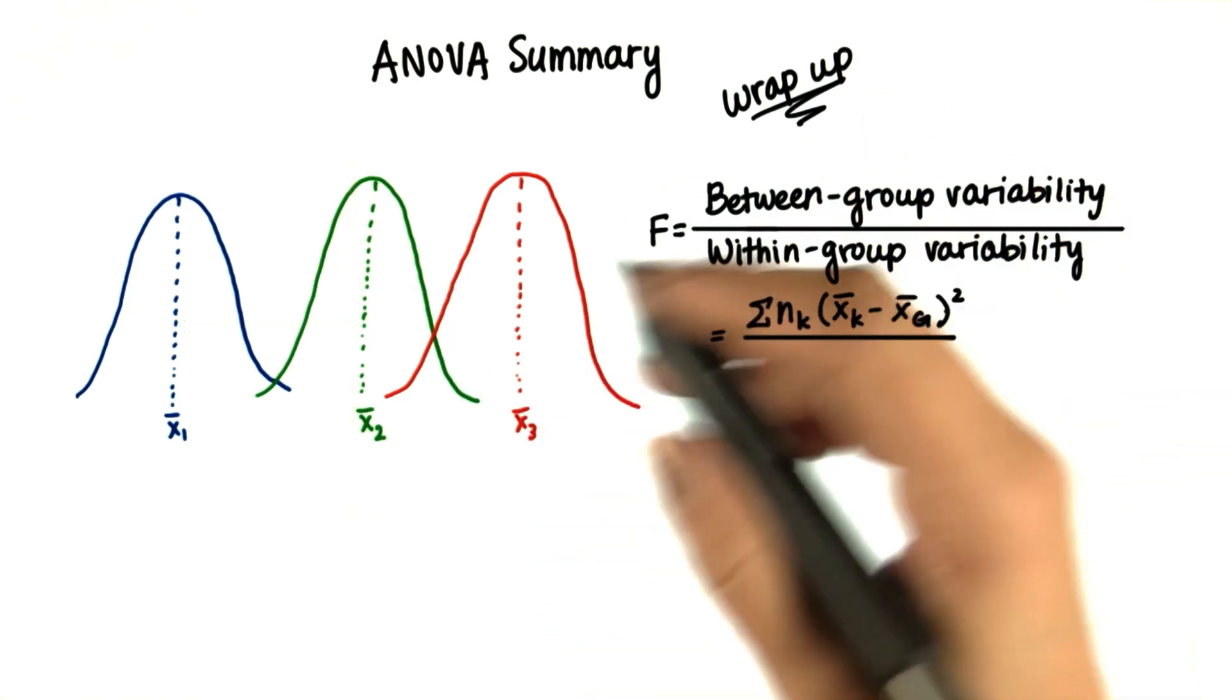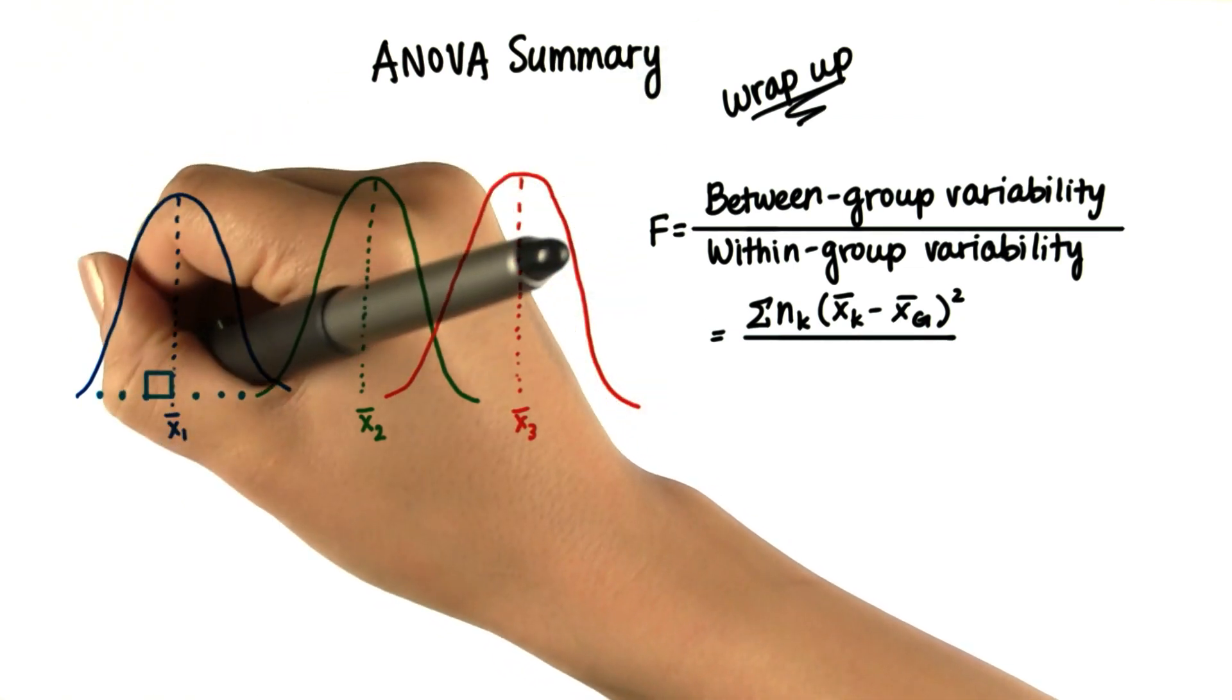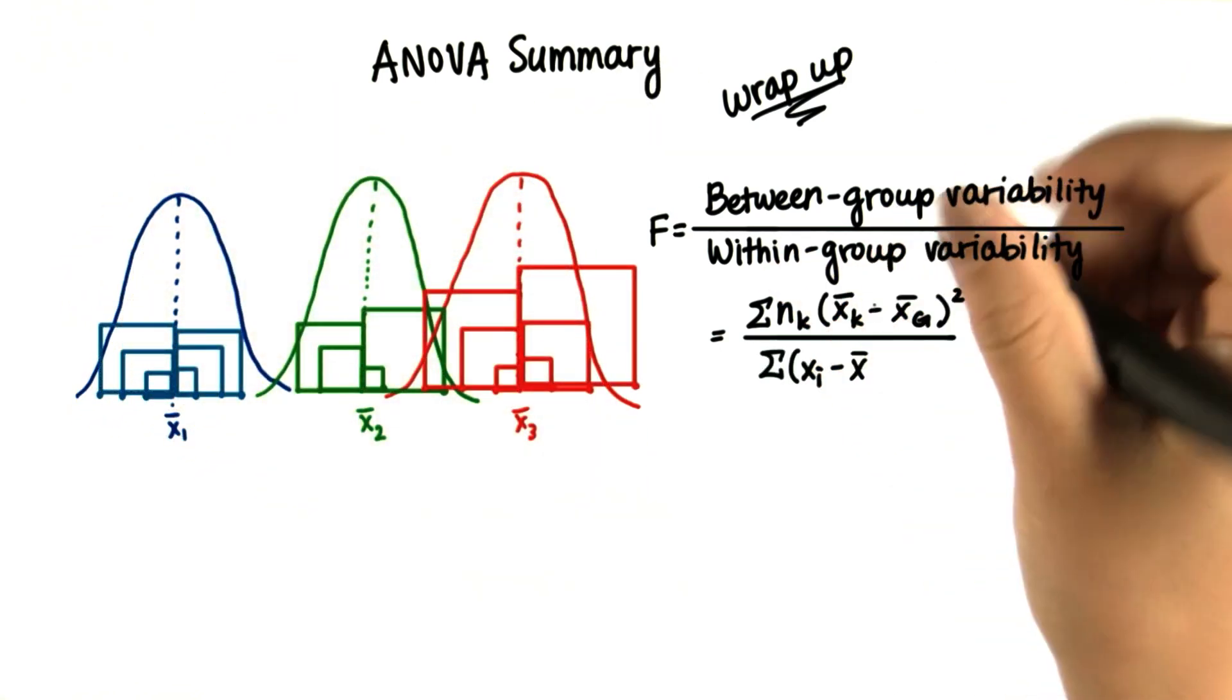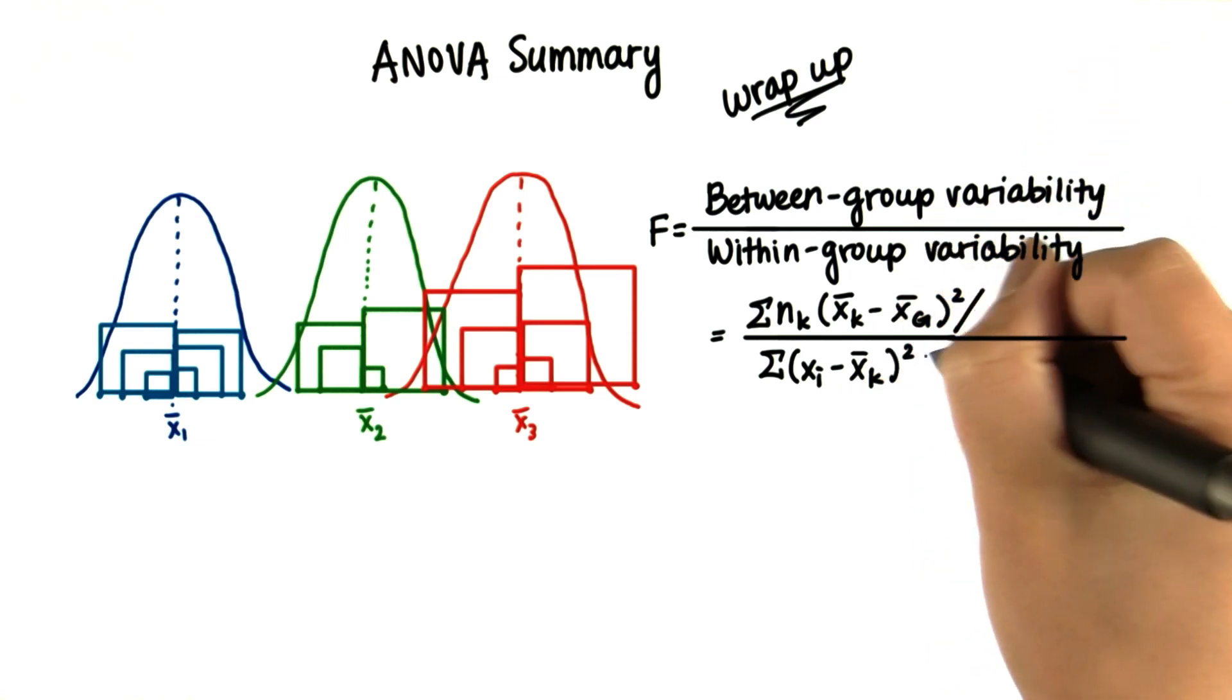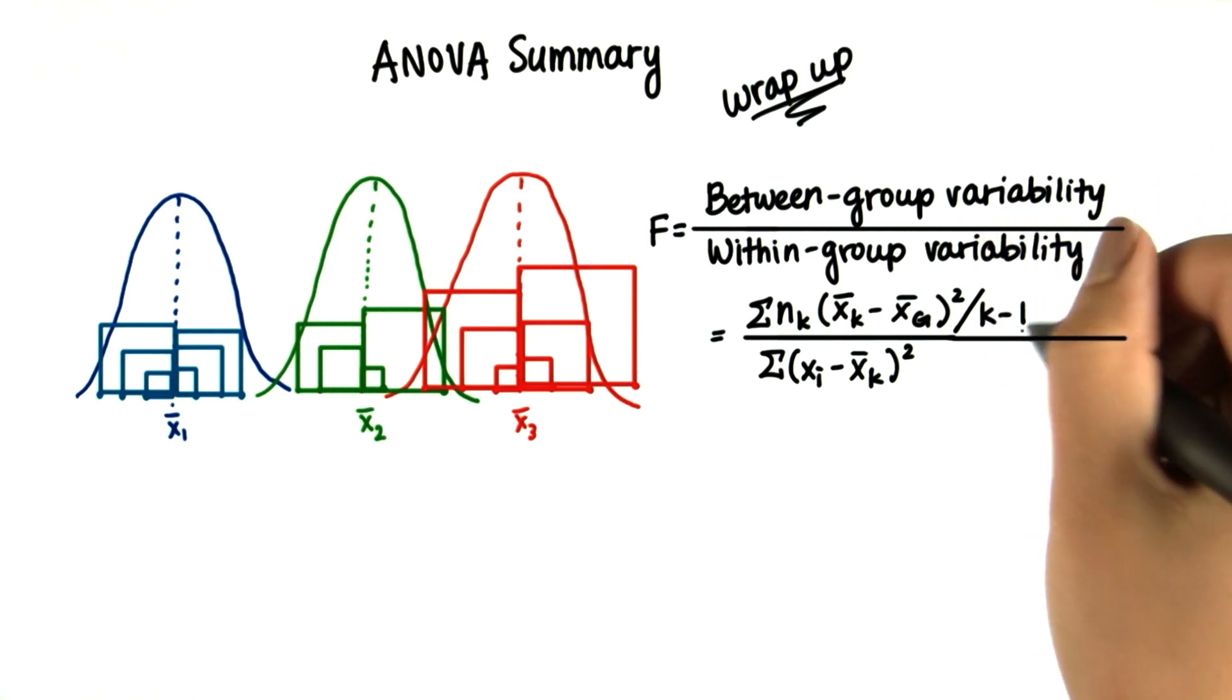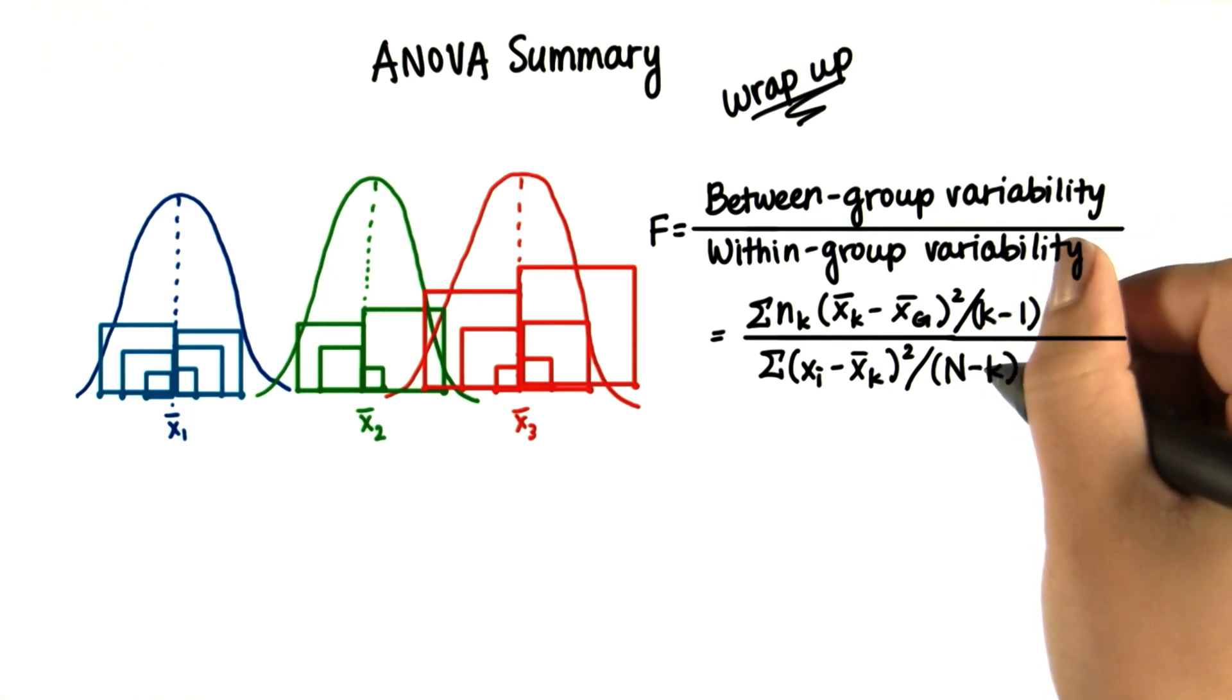Then we have to look at the within-group variability, which is essentially the square deviation of each value in each sample from the respective sample mean. So we add up all sums of squares from the respective sample mean. And then we have to find the average sum of squares for each by dividing by the degrees of freedom. In the case of the between groups, this is the number of samples minus 1. And for within groups, this is the total number of values minus the number of groups. This is the same as adding the degrees of freedom for each group.